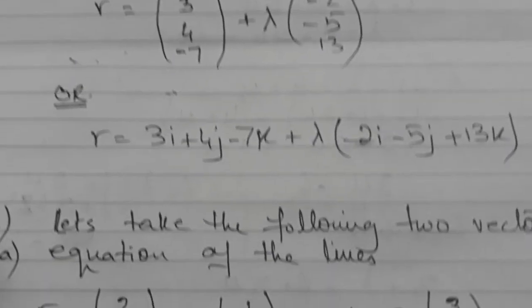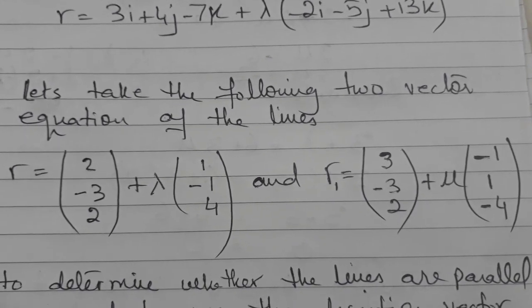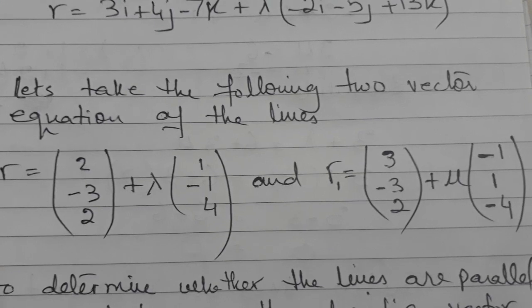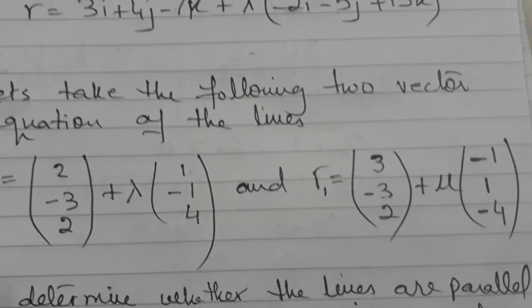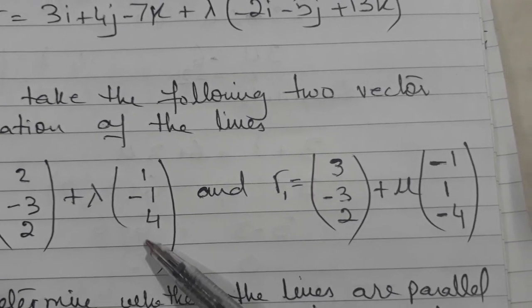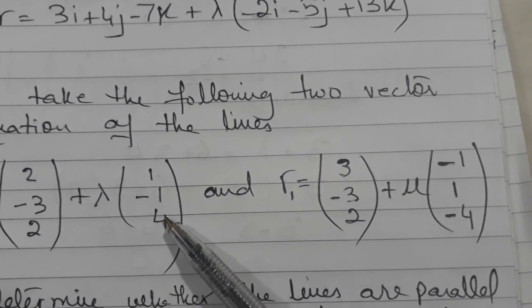Now let's take two vector equation of the lines which I have taken here. Now I will see whether these lines are parallel or not. To check that vector equation of the lines are parallel, you only need to see the directions of the vector. Now this vector is a direction of the line.